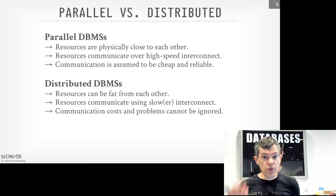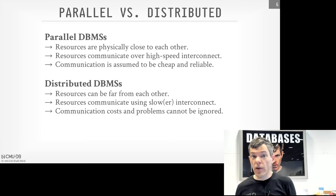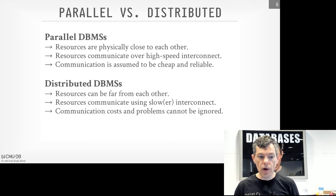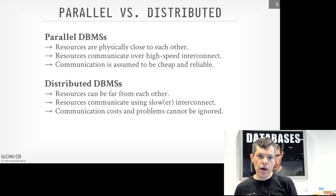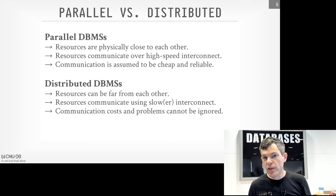In a distributed database, the assumption is that the nodes and resources are probably far from each other — either not in the same rack, but at least in the same data center, same state, or in some cases on the other side of the planet. We can't assume that communication is going to be fast and reliable. So in our algorithms, we're going to have to accommodate message loss or node failure in our protocols, because we might send a message to get some data and the other side never gets it. We'll see how to handle this when we talk about distributed databases later in the semester.